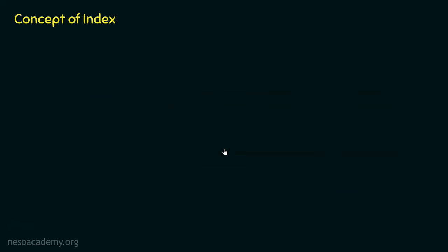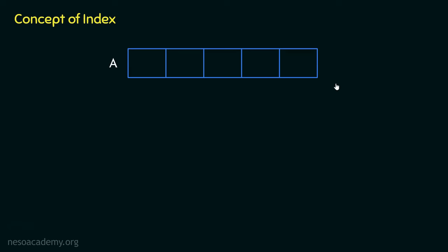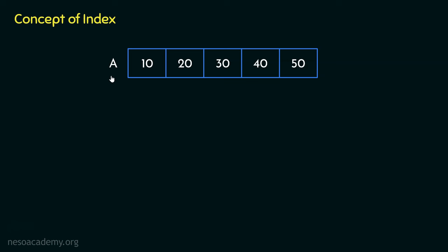Let me walk you through another illustration for better understanding. You probably have all heard about arrays. Consider this array, which has the name A. In this particular array, we have got 5 different cells. Suppose the elements within these cells are 10, 20, 30, 40, and 50 — basically, these are integers. Now an array is supposed to be a list of similar or homogeneous items, meaning all the elements within the array should be of the same type.